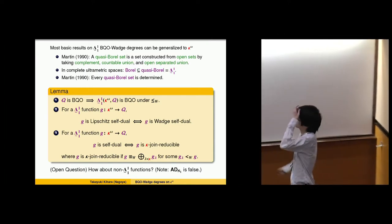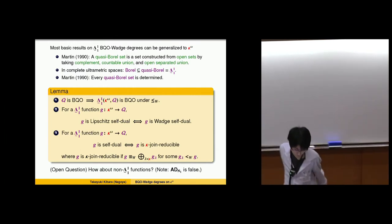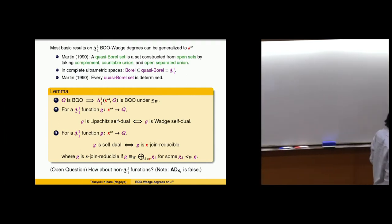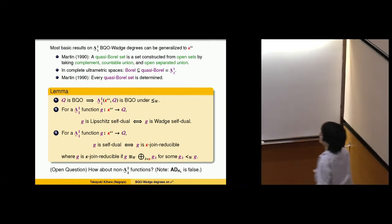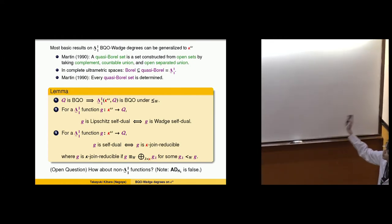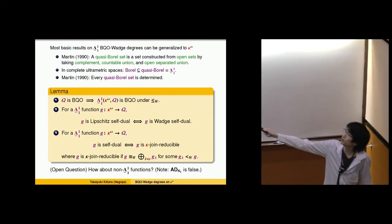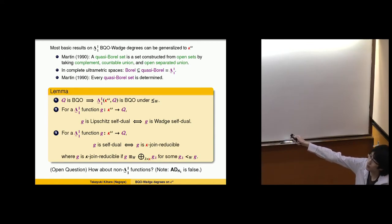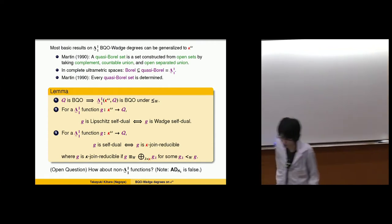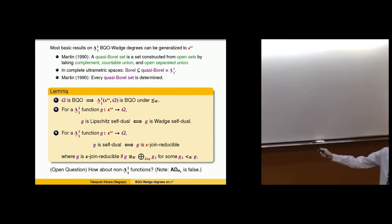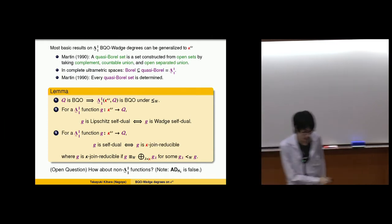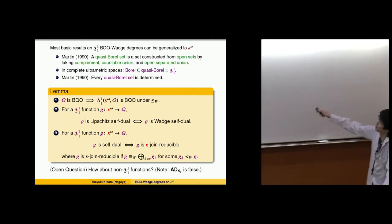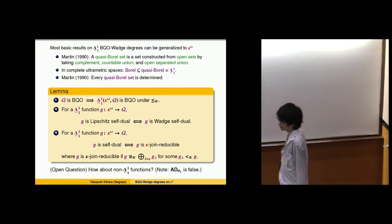This definition of quasi-Borel sets was introduced by Martin. In 1990, Martin extended his determinacy theorem to quasi-Borel sets, so every quasi-Borel set is determined. In Baire space, quasi-Borel sets coincide with Borel sets. For kappa-omega, quasi-Borel sets are exactly the delta-1 sets, making it the right notion. We can therefore extend all basic Wadge degree results to kappa-omega for delta-1 functions.